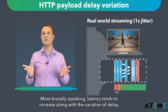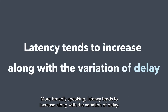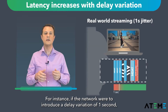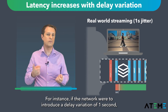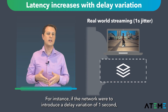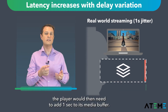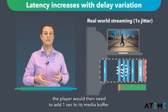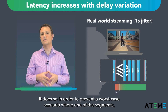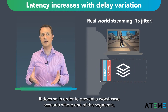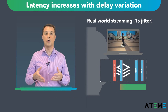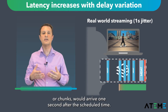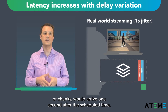More broadly speaking, latency tends to increase along with the variation of delay. For instance, if the network were to introduce a delay variation of 1 second, the player would then need to add this 1 second to its media buffer. It does so in order to prevent a worst-case scenario where one of the segments or chunks would arrive 1 second after the scheduled time.